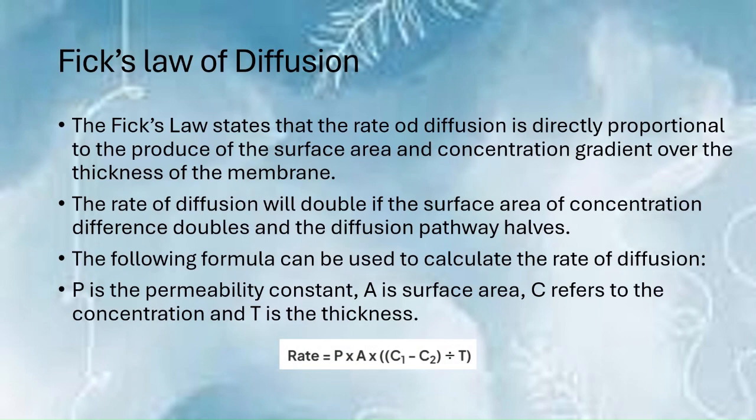Fick's law states that the rate of diffusion is directly proportional to the product of the surface area and concentration gradient, divided by the thickness of the membrane. The rate of diffusion will double if the surface area or concentration difference doubles, or if the diffusion pathway halves. The formula can be used to calculate the rate of diffusion, where D is the permeability constant, A is surface area, C refers to concentration, and D is the thickness. This formula is usually provided, but it is worth memorizing.